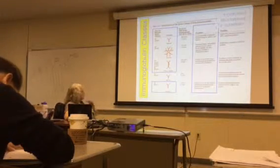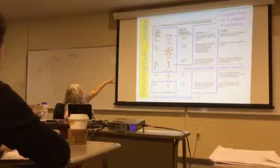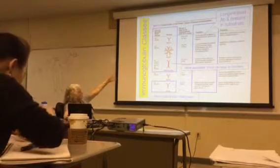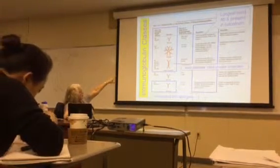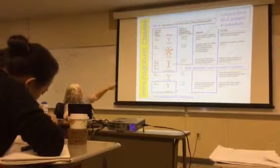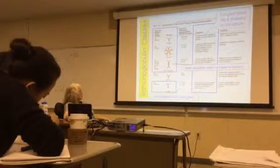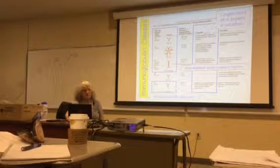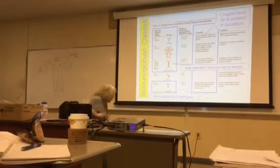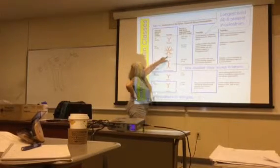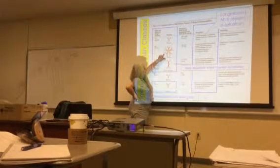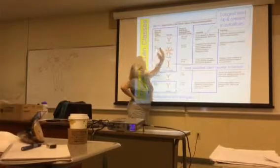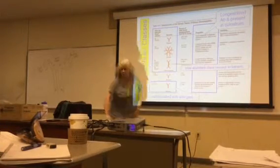Looking at a picture, the pentameric IgM is made up of five monomers. Each one of these parts of the antibody, since there are five of them, gives ten binding sites that can bind to antigens.